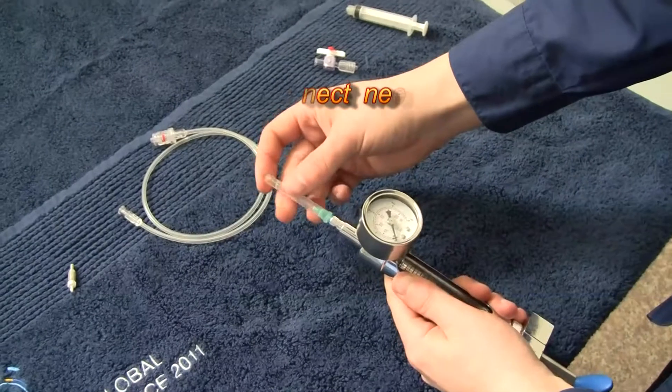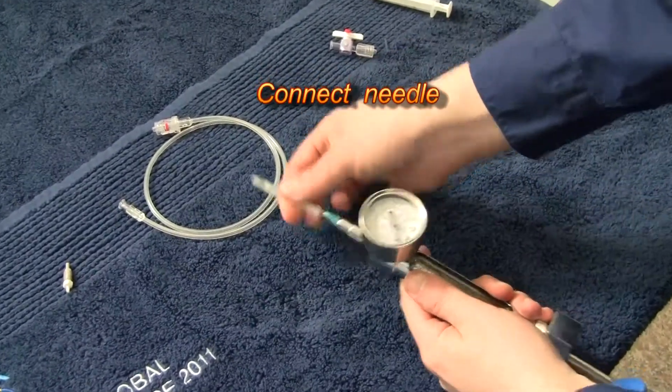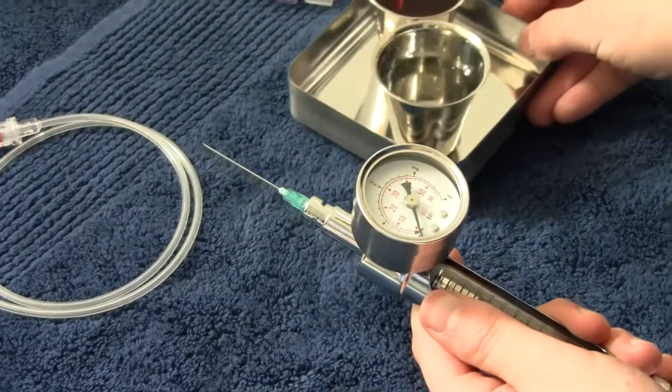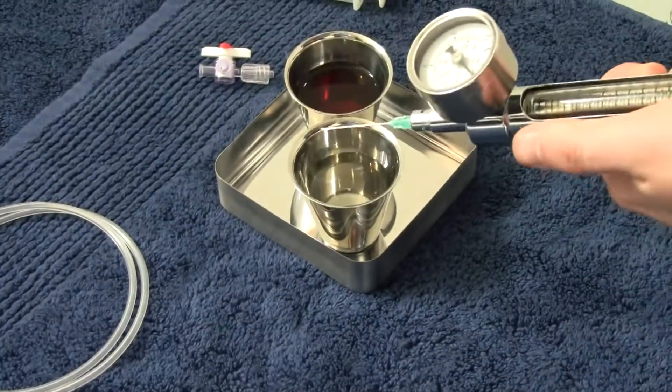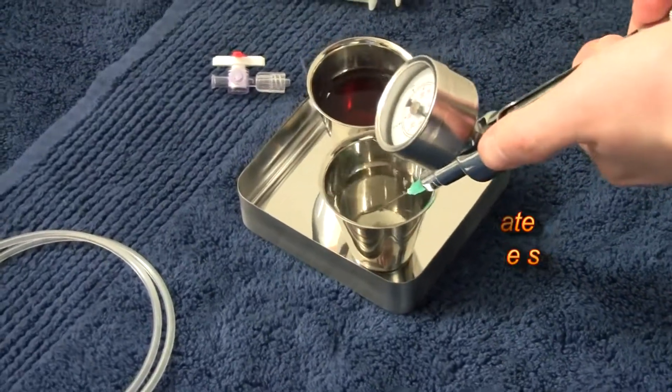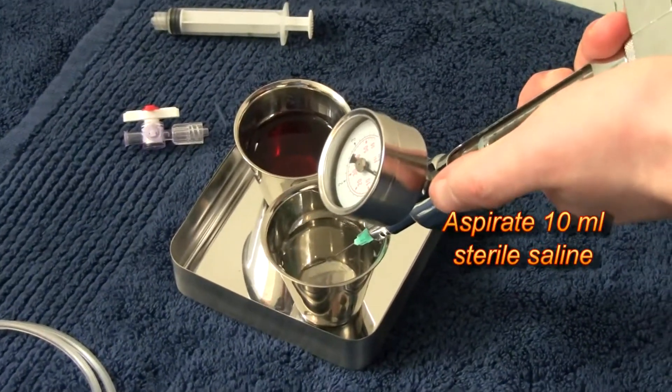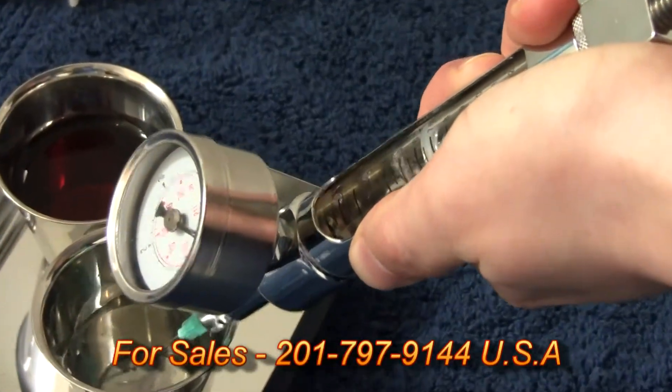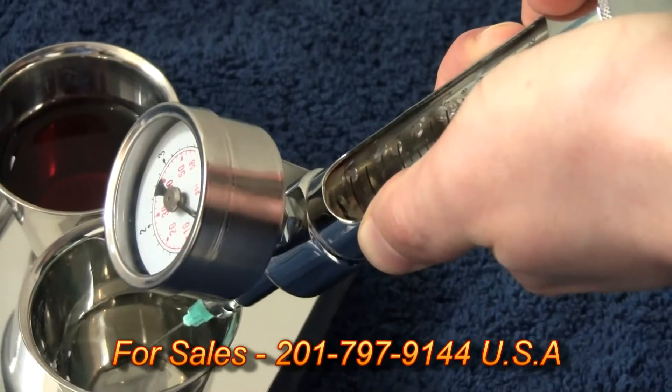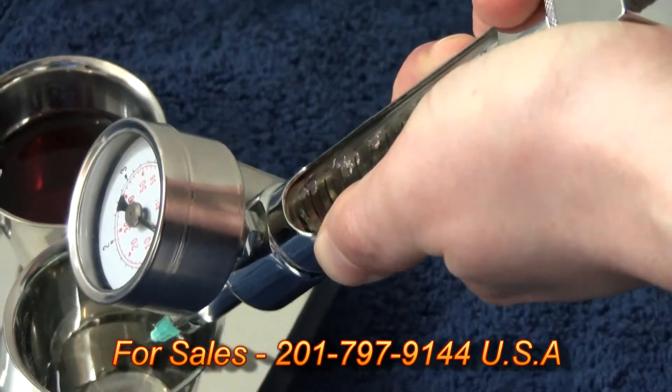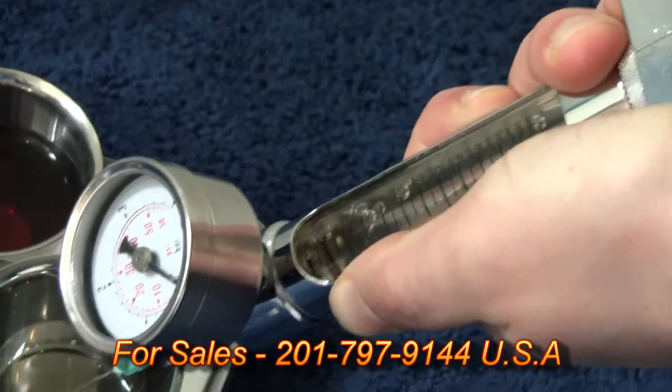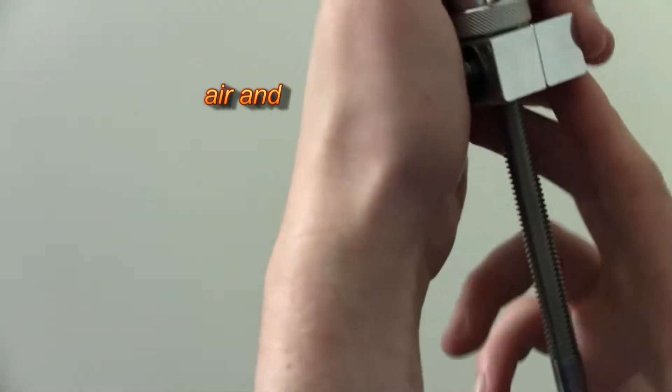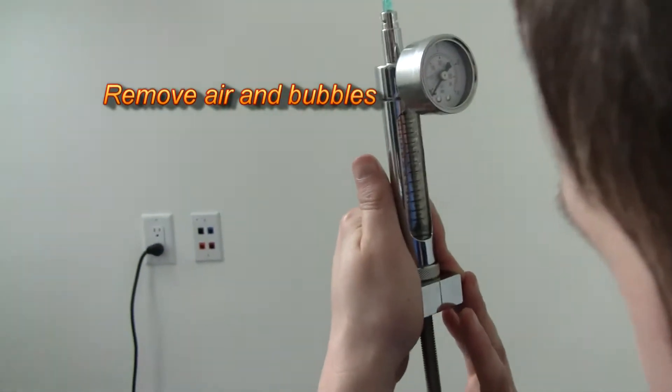Connect the 21G needle to the end deflator. Aspirate 10ml of sterile saline. Remove the air and bubbles from the end deflator.